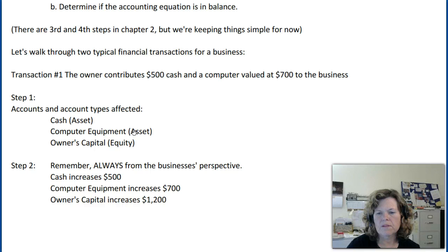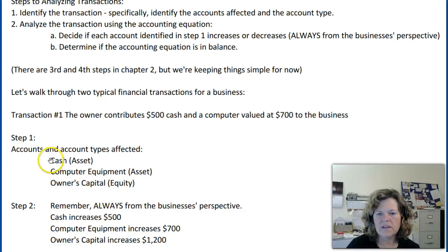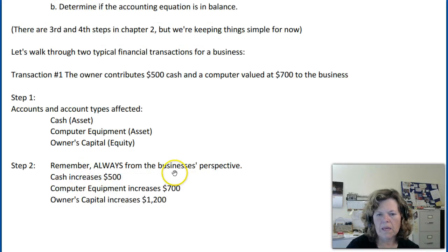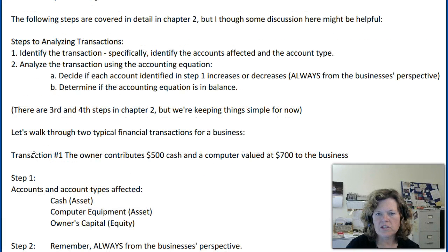Computer equipment, valued at $700, is being contributed to the business and is considered an asset. The third account in this transaction is owner's capital — this is the owner's investment in the company, and it's considered an equity account, as we discussed in the accounting equation. So we've identified the accounts — cash, computer equipment, and owner's capital — and their types: cash and computer equipment are assets, and owner's capital is equity. Step two: we want to analyze the transaction and decide if each account increases or decreases, then determine if the accounting equation is in balance.